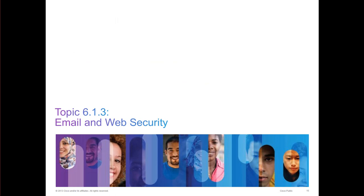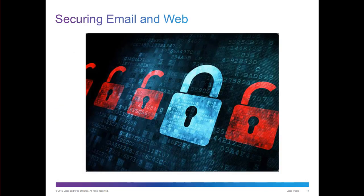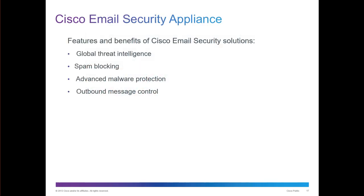Getting into email and web security — we need to protect both of these assets. Cisco does have protections for both. Part of their email security solution includes global threat intelligence, anti-spam, advanced malware protection, and the ability to control outbound messages. That way, if your account has been compromised, they can use outbound message control to prevent messages from going outside.